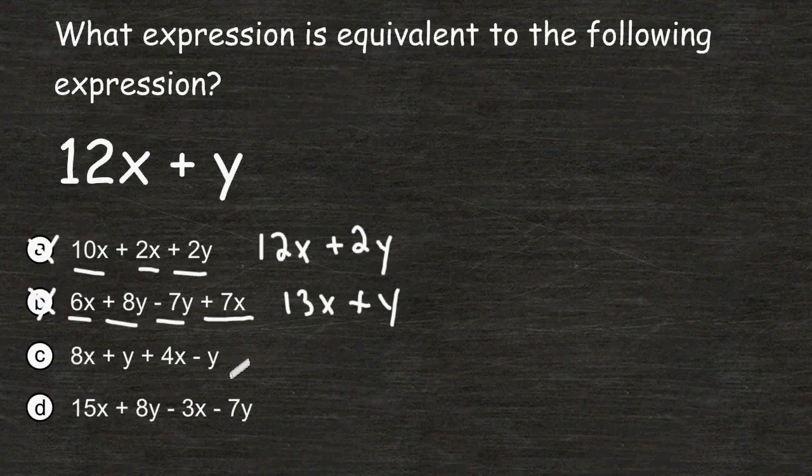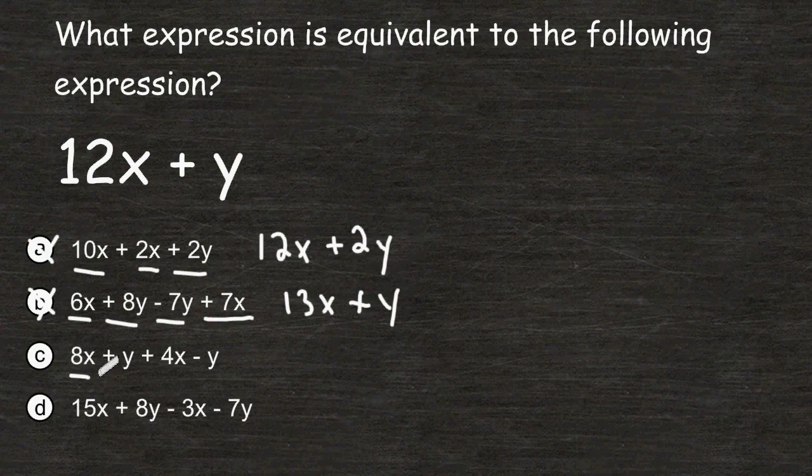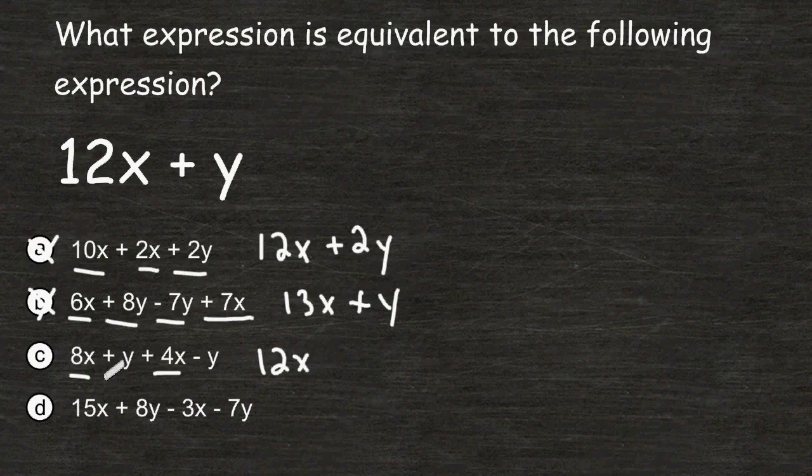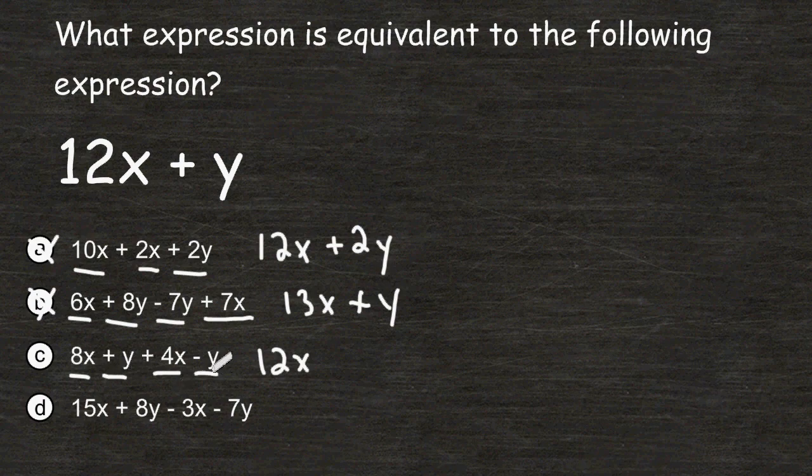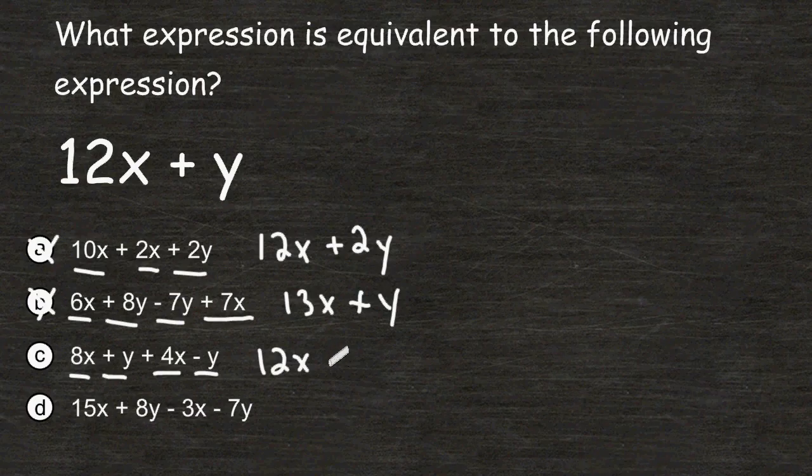For choice C we are going to combine 8x and 4x which is a total of 12x. We have plus y and we have a minus y. So if you had 1y and then you lose 1y that leaves you with 0. We don't have to write plus or minus 0 here, we just do not write anything.